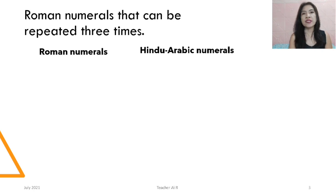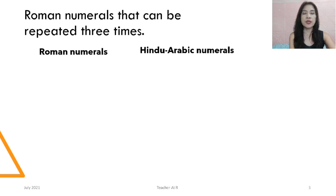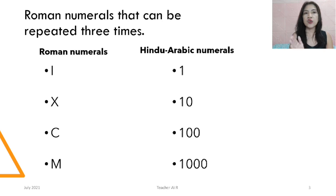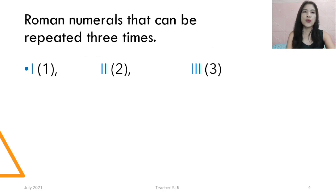We have to remember the Roman numerals that can be repeated 3 times. Not all Roman numeral symbols can be repeated 3 times. The symbols that can be repeated are I (which is 1), X (which is 10), C (which is 100), and M (which is 1000). So: I is 1, II is 2, III is 3.